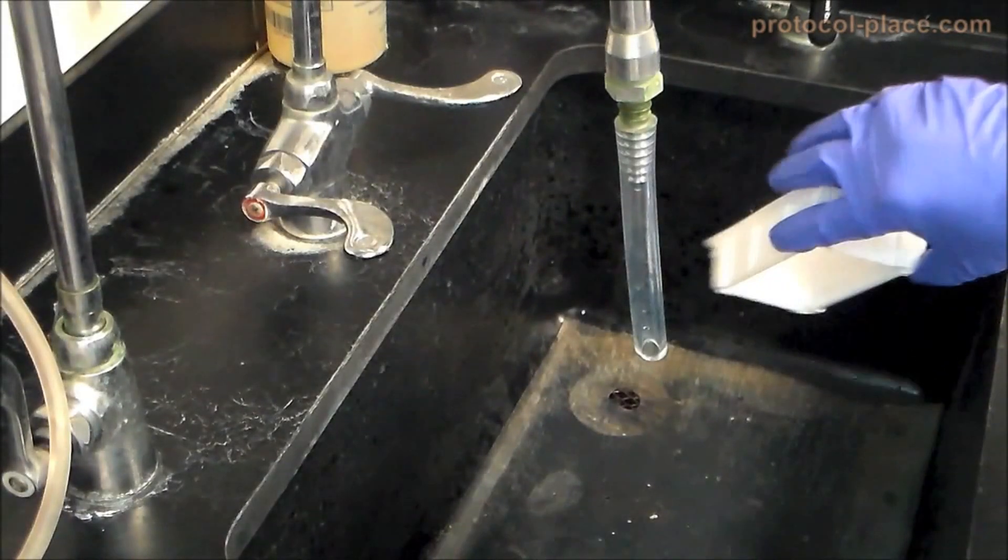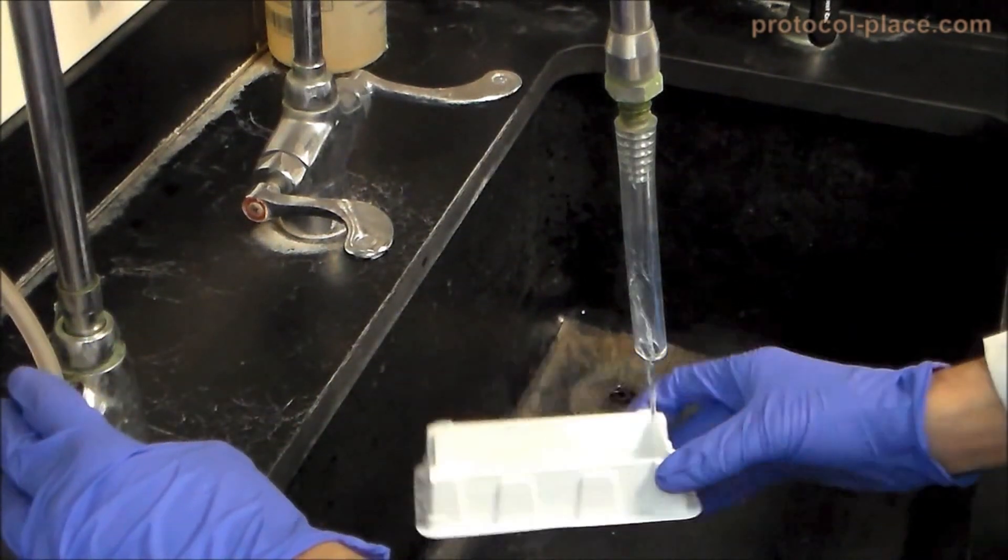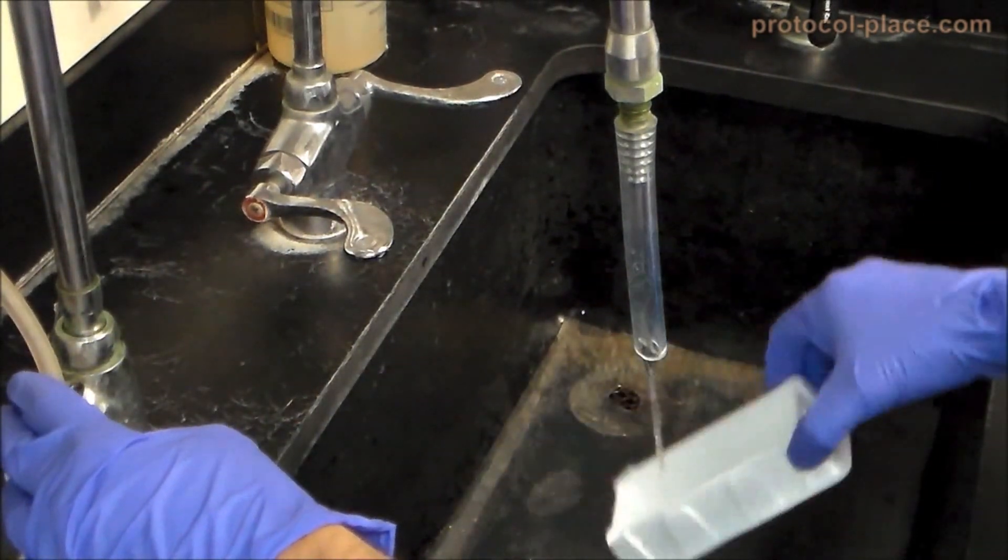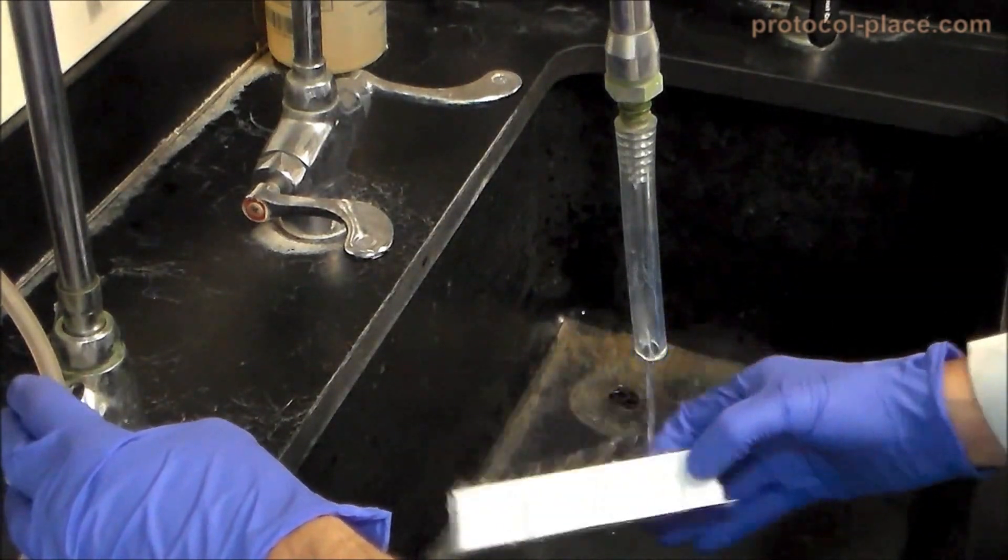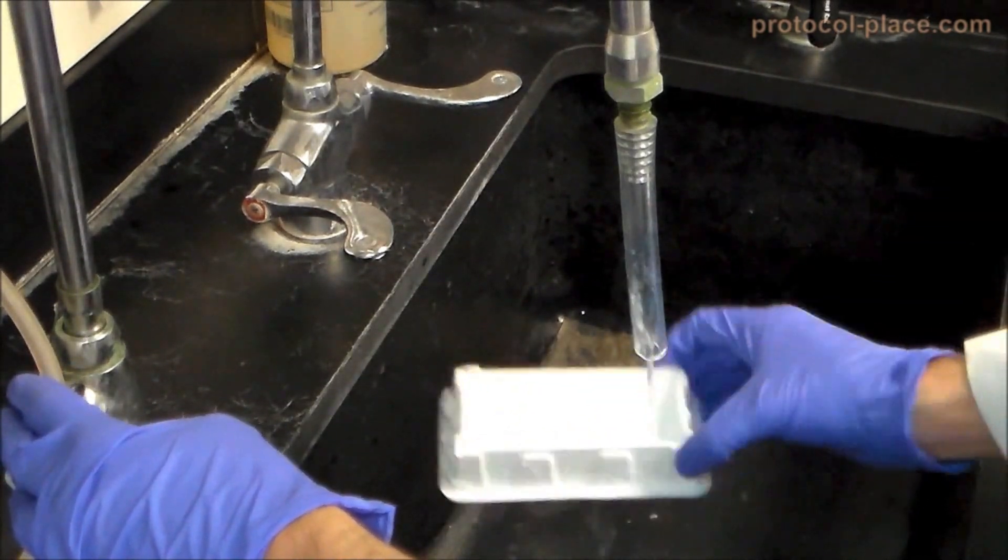The reservoir can also be emptied, rinsed with distilled water, or replaced between washes in order to prevent contamination of the ELISA plate with solution left over from any of the previous washes.